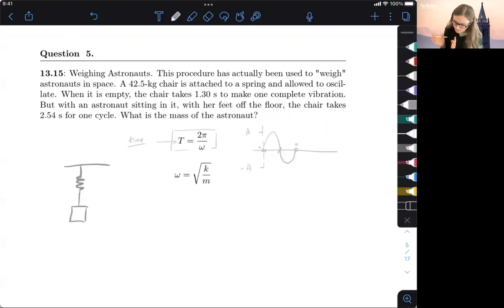So they do this process twice. There's an empty chair, we have the mass of the chair. It's attached to a spring and allowed to oscillate, so it's moving up and down. So that means it's going to start at its equilibrium position, they're going to displace it a certain amount, and then it's going to be allowed to oscillate